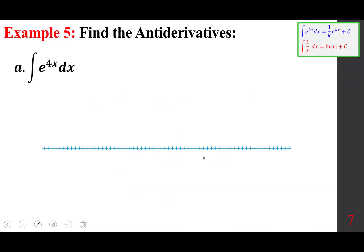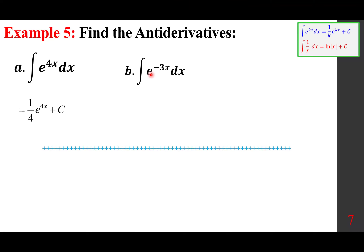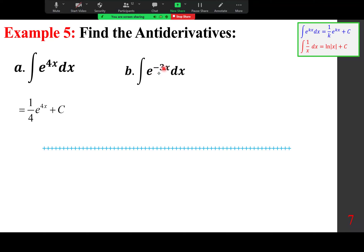When differentiating e^(4x) you multiply by 4, so when integrating you divide by 4. The answer is (1/4)e^(4x) plus a constant. Similarly, the integral of e^(−3x) is (−1/3)e^(−3x) plus a constant.